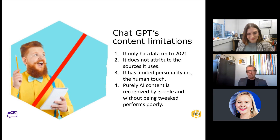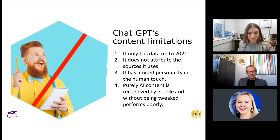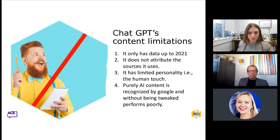But ChatGPT does have content limitations. Bear in mind the data it's referencing is only taken from up to 2021, so it's out of date. It doesn't attribute sources it uses — so if there's content that's clearly come from somewhere else, they might take exception to it. It has limited personality — the human touch. I still reckon I have slightly more personality than it on a good day after three coffees. That makes your content, while factually correct, hard for people to engage with — we really do engage with stories and nuances. And weirdly, machines don't like machines: purely AI content is recognised by Google as AI-generated, it starts to perform poorly and makes a website less found.